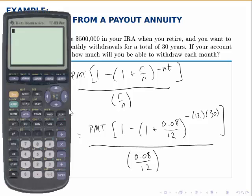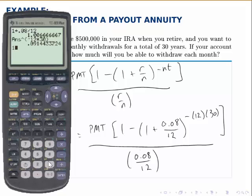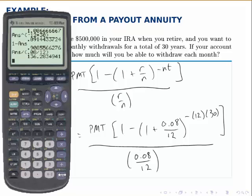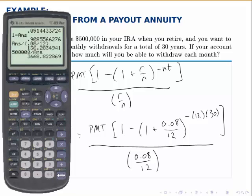On the calculator, I'll start by calculating the innermost parentheses: 1 plus 0.08 divided by 12. Raise that to the negative 12 times 30, or negative 360. Then take 1 minus that answer — that answer is everything in brackets in the numerator. If I divide this by 0.08 divided by 12, this number times the payment amount equals $500,000, the lump sum. So, dividing $500,000 by this amount, I find that the regular withdrawal amount I can take every month for those 30 years is $3,668.82.